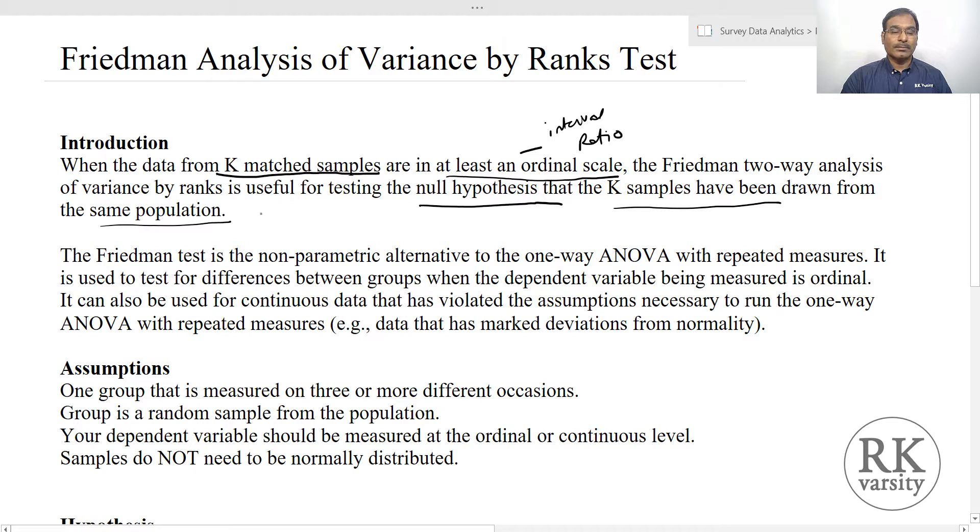When we say K matched samples, we mean three or more. So in that case, we call this K matched samples - that is your independent variable. And if your dependent variable is measured on at least an ordinal scale, interval scale, or ratio scale, then you need to run a Friedman's test for K-related samples.